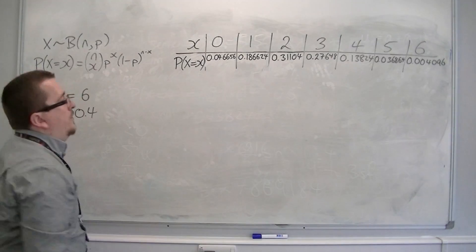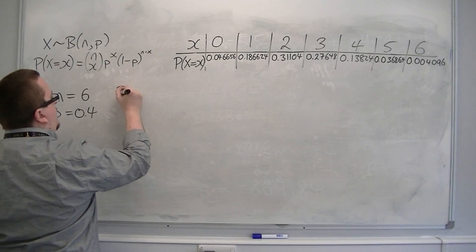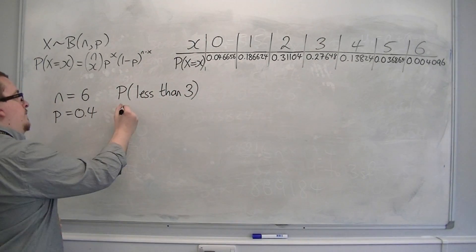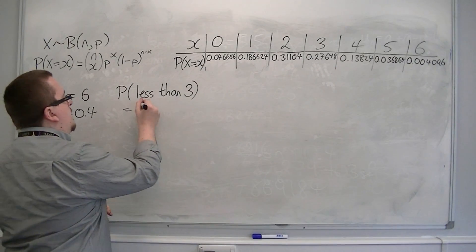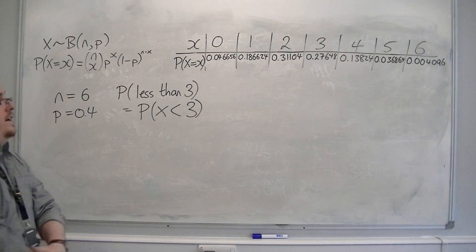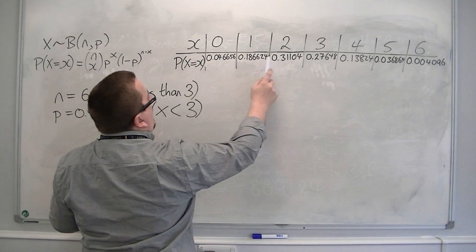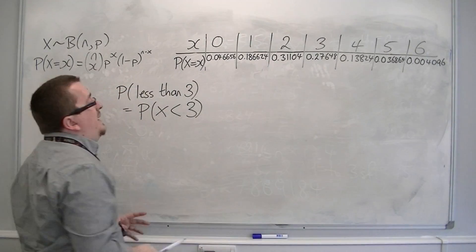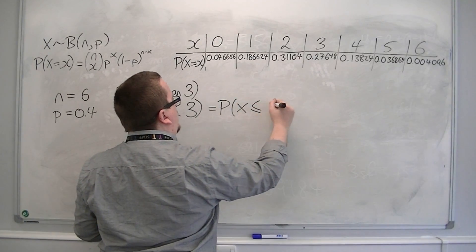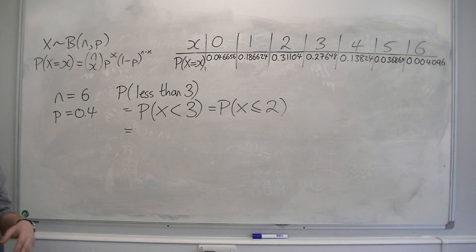Now let's get on to the cumulative bit. Let's say I wanted the probability of getting less than 3. That would mean the probability of x being less than 3, which would include 0, 1, and 2, but not 3. So I could also write this as the probability of x being less than or equal to 2. In binomial form, these are synonymous — they mean the same thing.